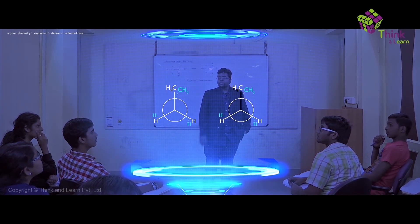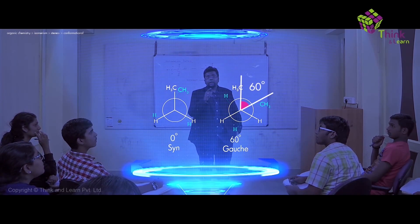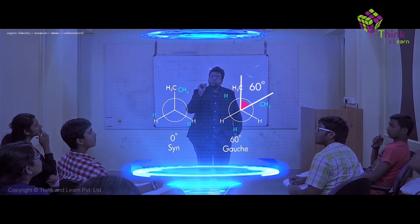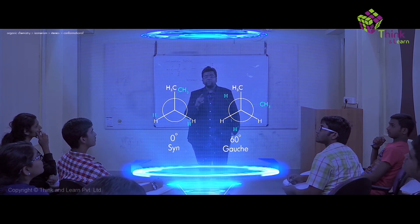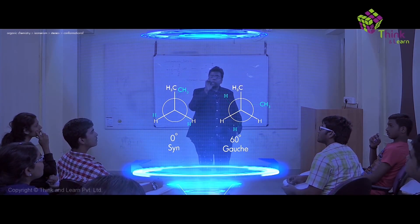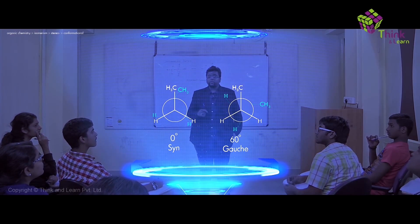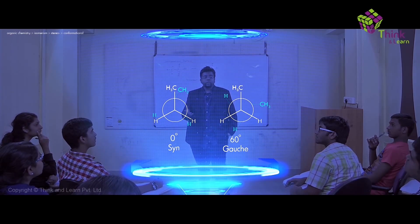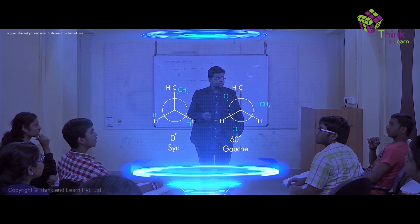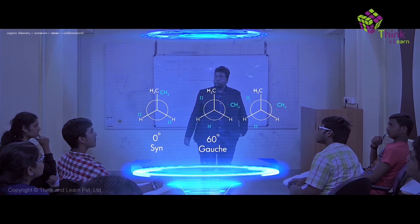Now if I change the dihedral angle and rotate it by 60 degrees, you get something like this. The dihedral angle I'm referring to is between CH3 and CH3. In the first conformation, the angle was zero — it was eclipsed. Now between CH3 of the first carbon and CH3 of the second carbon, the angle is 60 degrees. This is called the gauche conformation.